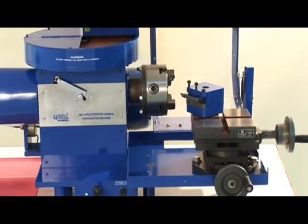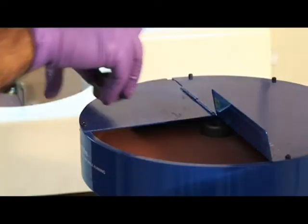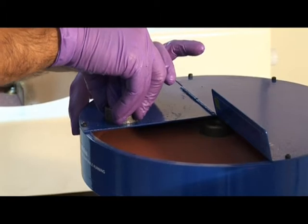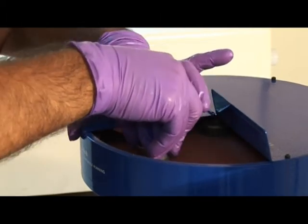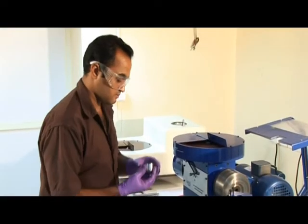The 3-in-1 sample preparation machine is simple to use. The steel sample to be ground is firmly held flat by hand to ensure a flat surface. The sample is now ready for analysis.